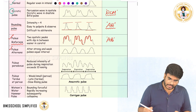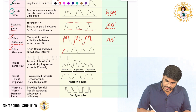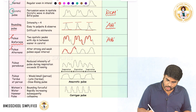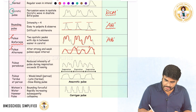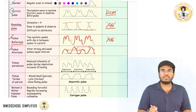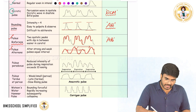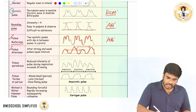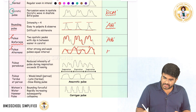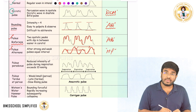Next, pulsus alternans. Here there is a weak pulse followed by a strong pulse — weak pulse, strong pulse. The intervals between them are regular. This is called pulsus alternans. Pulsus alternans is seen in heart failure.